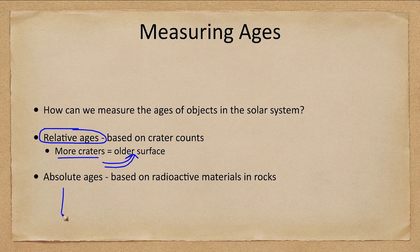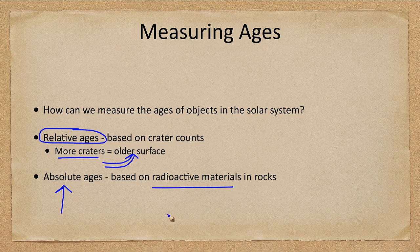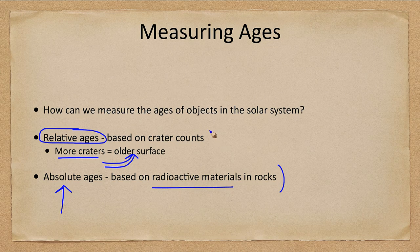Then we will look at the absolute ages. That is actually figuring out the exact age by looking at the concentrations of radioactive materials in rock samples. The difference is this method requires a sample of the material — you actually have to get a piece of the object you want to figure out the age for. The relative method can be done from a distance.